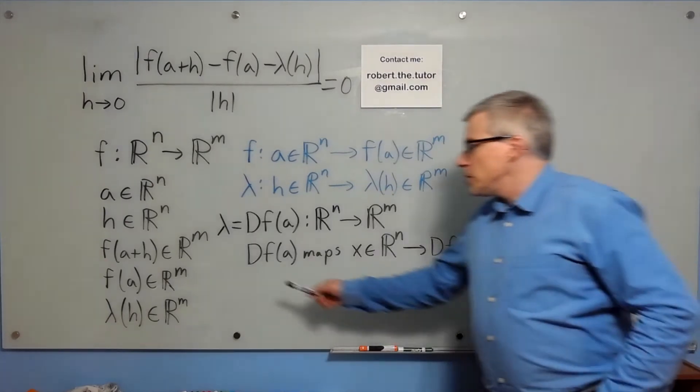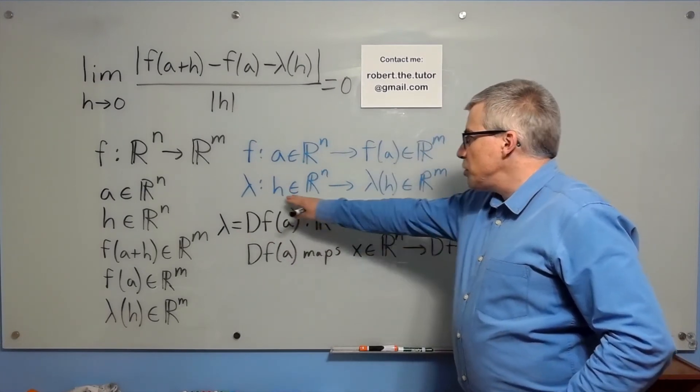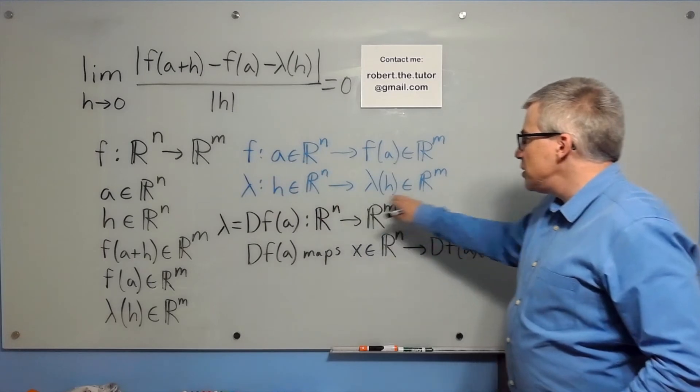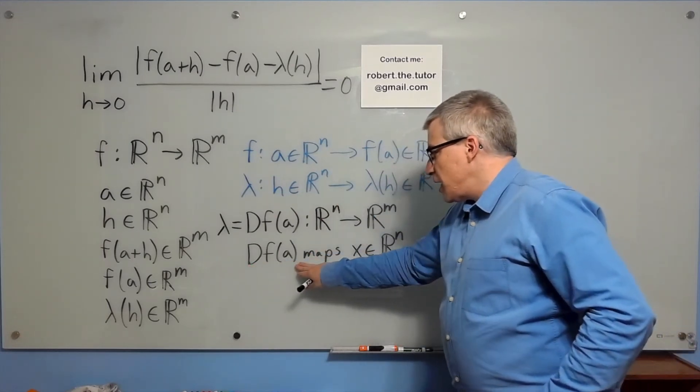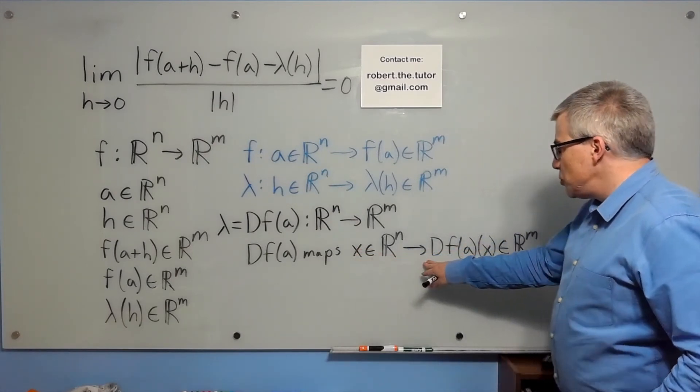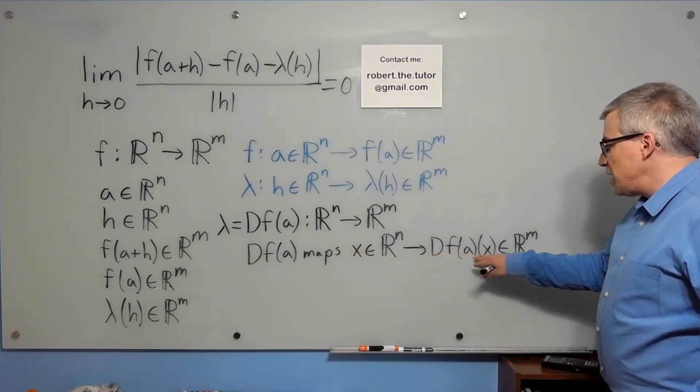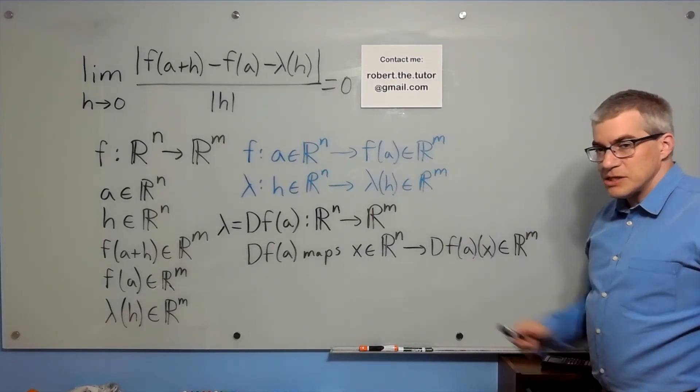Specifically, lambda is df of a, and lambda, we know, maps an element of R^n to an element of R^m. So df of a maps x, which is an element of R^n, to df of a of x, element of R^m. That's why I made this expanded notation.